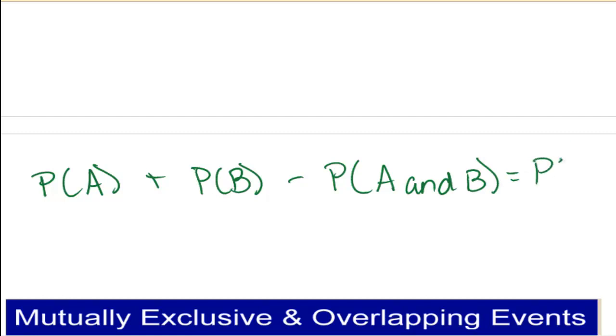Let's review our formula for overlapping events. The probability of event A plus the probability of event B minus the probability of where they overlap, A and B, is going to be the probability of A or B.